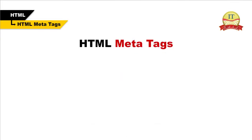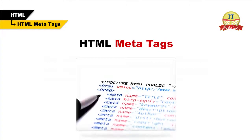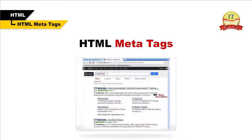HTML metatags. HTML lets you specify metadata information about a document rather than document content. The HTML metatags can be used to describe the properties of an HTML document. Metadata provided using metatags is a very important part of the web. It helps search engines in finding the best match when a user performs a search.